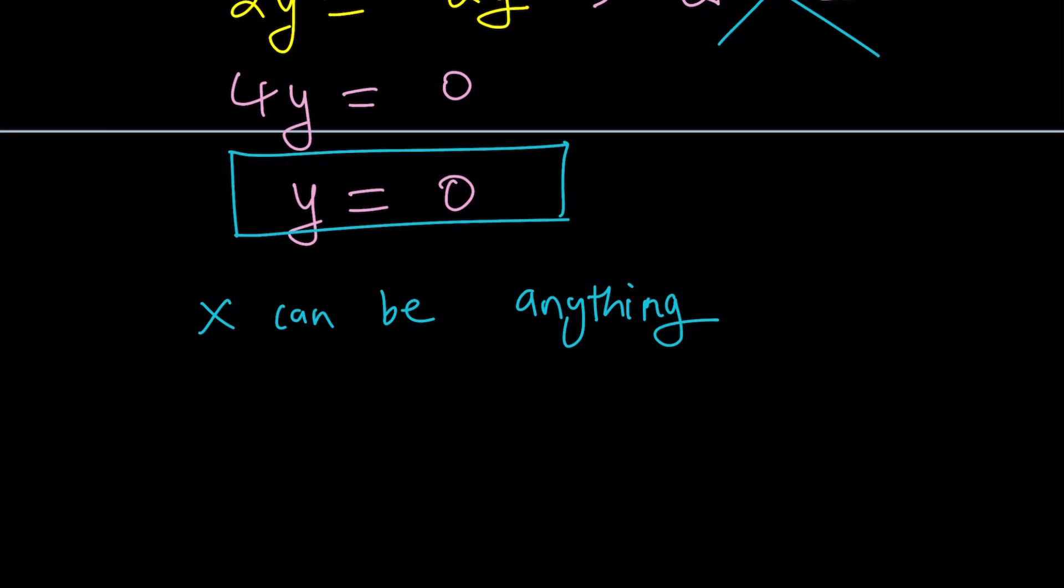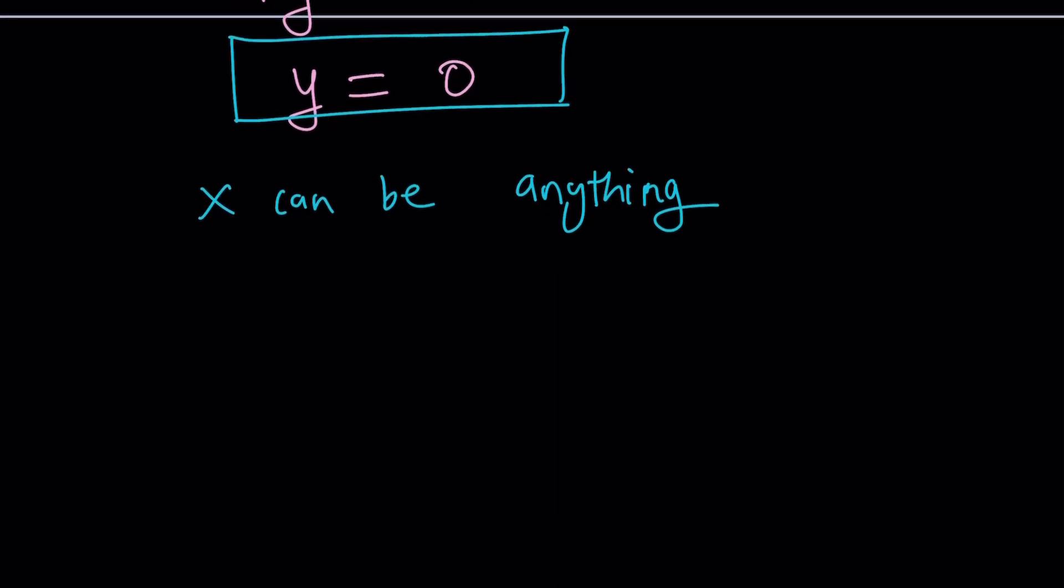And what does that tell you? That just tells you that any number with an imaginary part of zero is going to be the answer. In other words, if our number is X plus YI, which is X basically, and X is real.